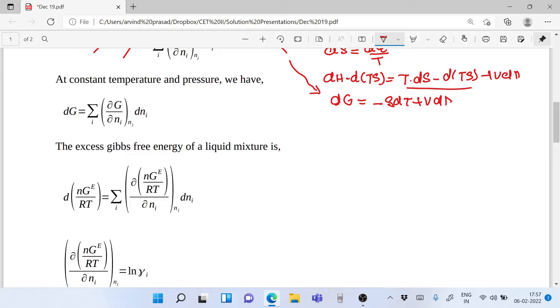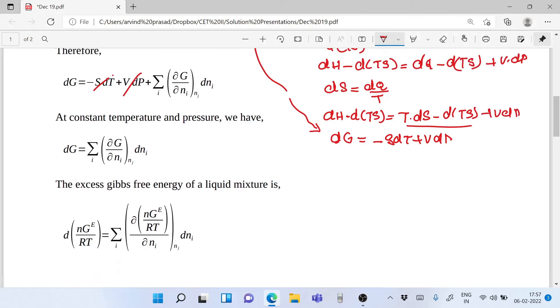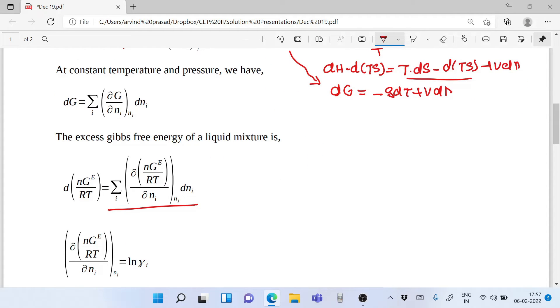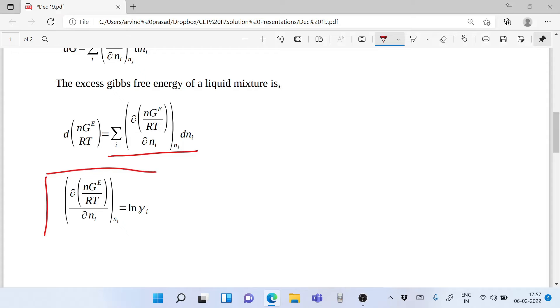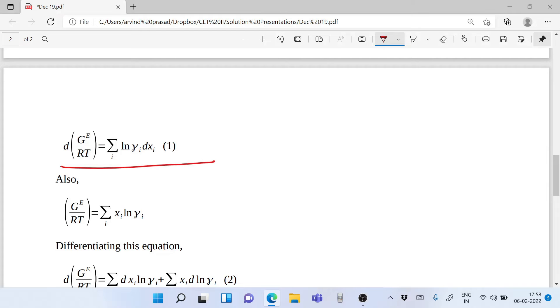The excess Gibbs free energy of a liquid mixture is partial NGE by partial RT. We replace partial NGE by partial RT in this. The excess Gibbs free energy on the left side can be written as summation of partial NGE by partial RT by partial Ni times dNi.